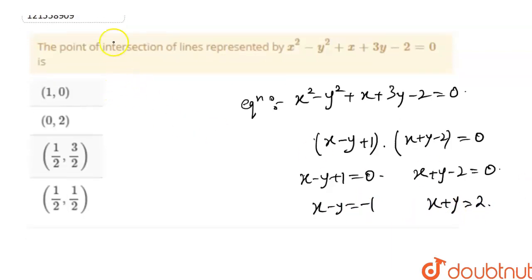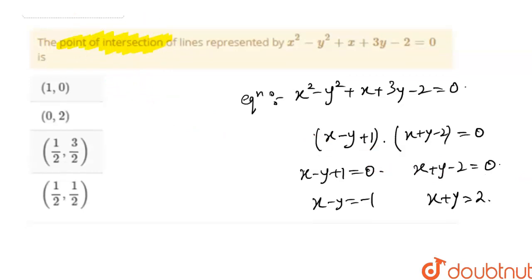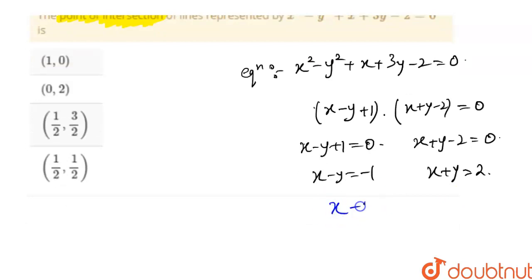Now I have the point of intersection. The question is going to be finding the point of intersection. To find the point of intersection, what will I do here? I will solve these two simultaneously.